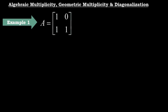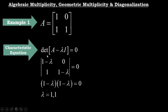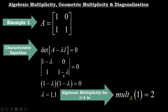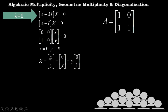Example 1: A is the 2×2 matrix [1, 0; 1, 1]. The characteristic equation is det(A − λI) = 0. Subtracting lambda from the diagonal entries gives (1−λ)(1−λ) = 0, so lambda equals 1, repeated 2 times as a root of the characteristic equation. Therefore the algebraic multiplicity for lambda = 1 is 2.